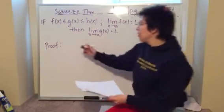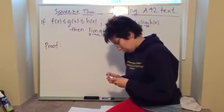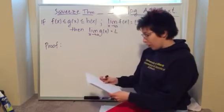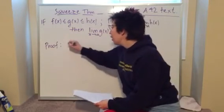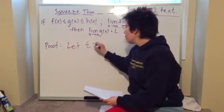So let's start with that. Start with writing utensils ready. Let epsilon be greater than zero.